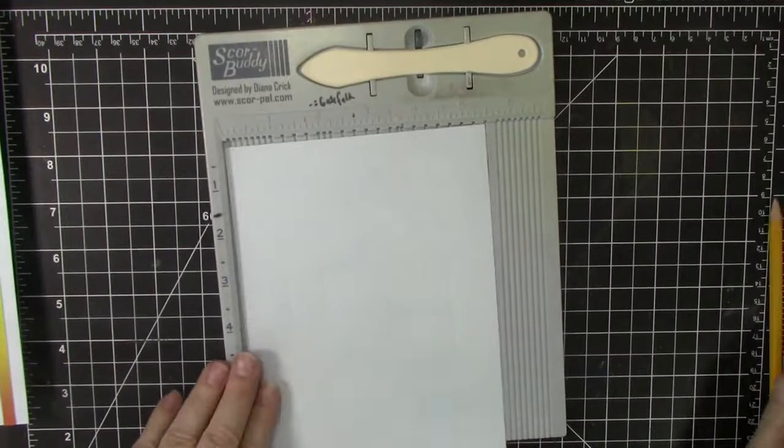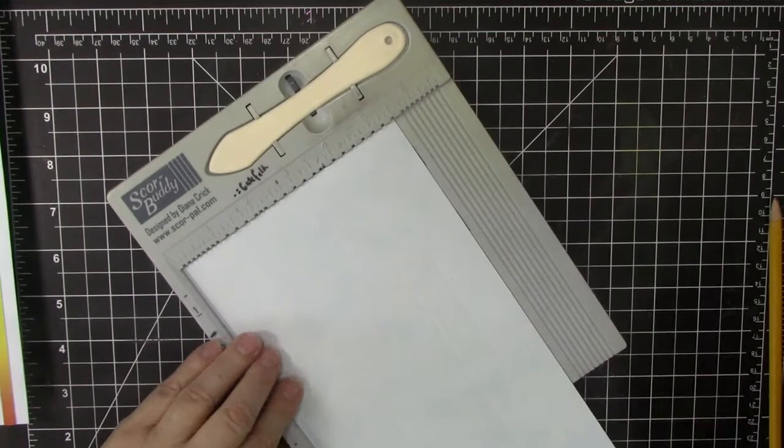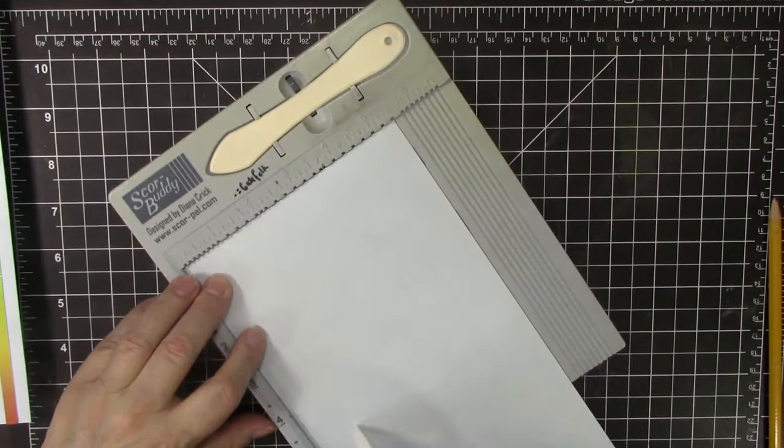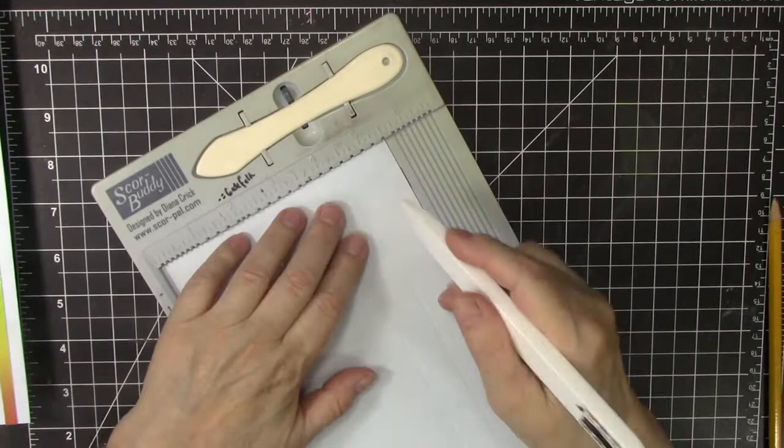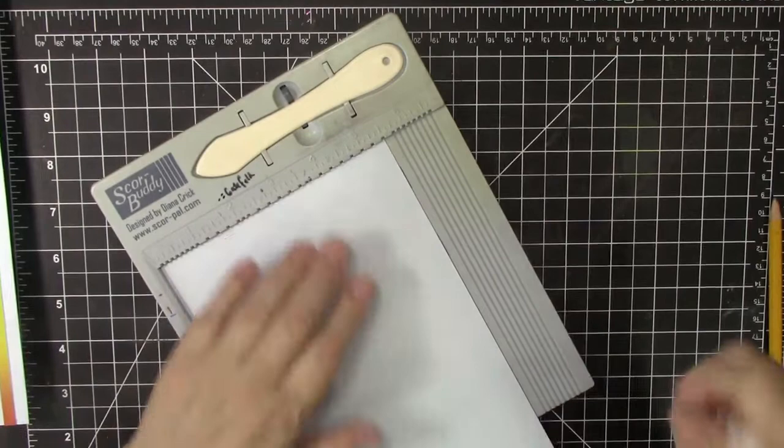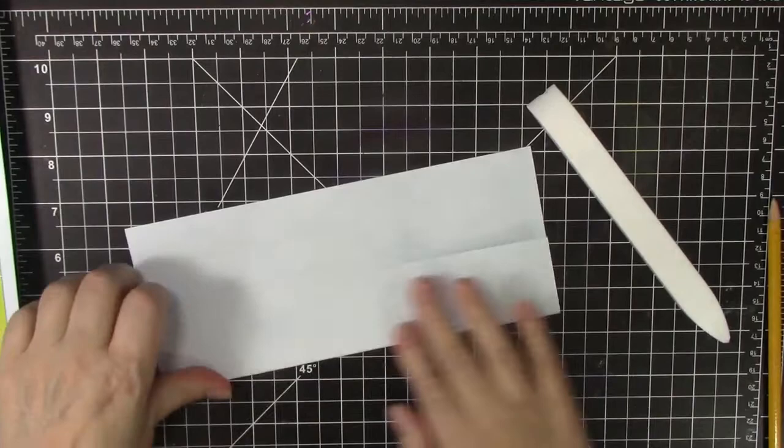So we're going to start with the scoring. This is the course of the Score Buddy, which I love and I have right by my desk. And it won't do the whole length, but that's okay. We're going to do half and half. So once again, we are going to score at 1 inch, 1 3/4, and then at 3 3/4, and at 4 1/2.